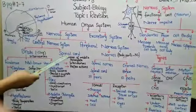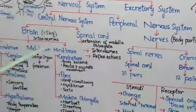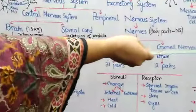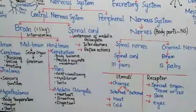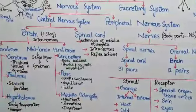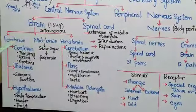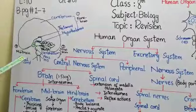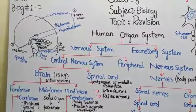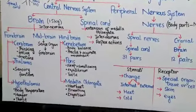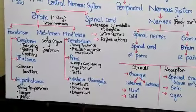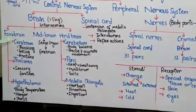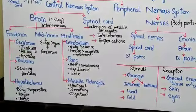The central nervous system consists of the brain and spinal cord. An adult human brain weighs 1.5 kg. Most of the neurons present in the brain are inter-neurons. The brain is divided into three parts: forebrain, midbrain, and hindbrain. As you can see in the diagram, the upper portion is the forebrain, the central portion is the midbrain, and the lower portion is the hindbrain. The forebrain is the largest of these three parts.